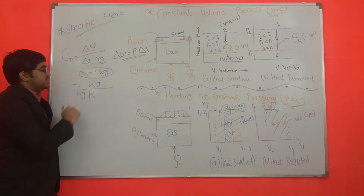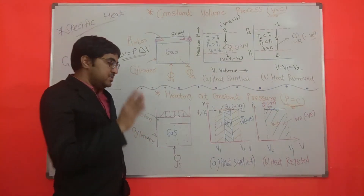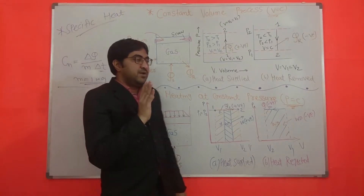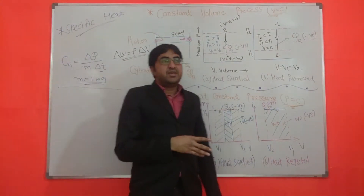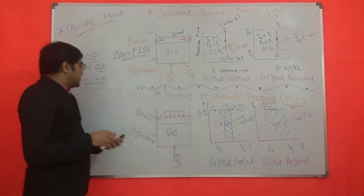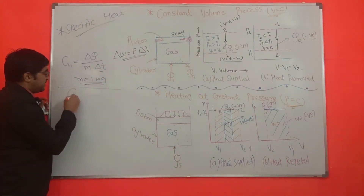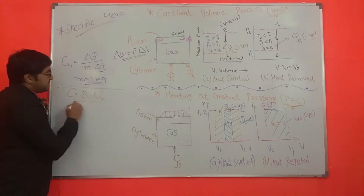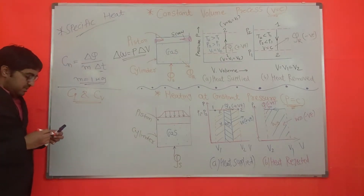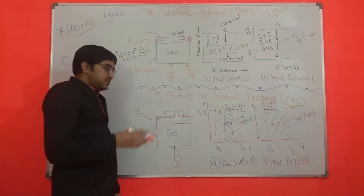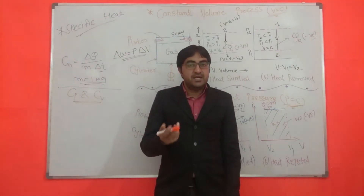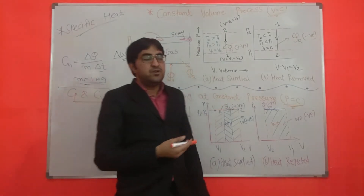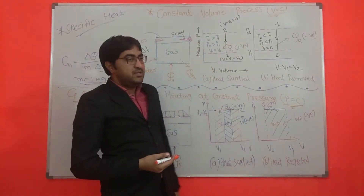The unit of specific heat is kilojoule per kg Kelvin. For solid as well as for liquid, there is only one value of specific heat. But in case of gases, there are two specific heats: Cp and Cv. For liquid, the specific heat has a standard value of 4.187 kilojoule per kg Kelvin, which we have already used in some calculations.